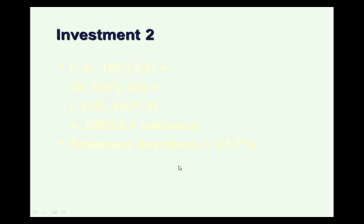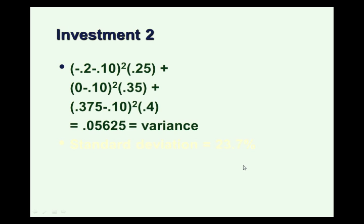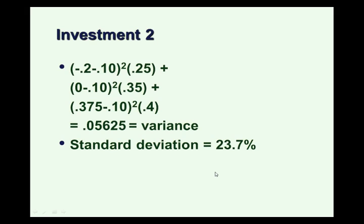For investment 2, we follow the same process. The first possible outcome is minus 20%, minus the expected return, weighted by its probability. The second possibility is a 0% return, and the third is a 37.5% return. Doing this math gives us the variance, and taking the square root gives a standard deviation of 0.237, or 23.7%.